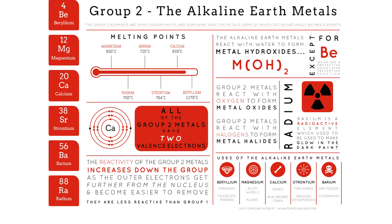The alkali earth metals have melting points that are a little less predictable. They have two valence electrons, and again their reactivity increases down the group. They like to react with oxygen and halogens. You'll find beryllium in emeralds, magnesium in alloy wheels, calcium in your bones and in chalk, strontium used in fireworks, and barium used in glassmaking — it is also a poison.